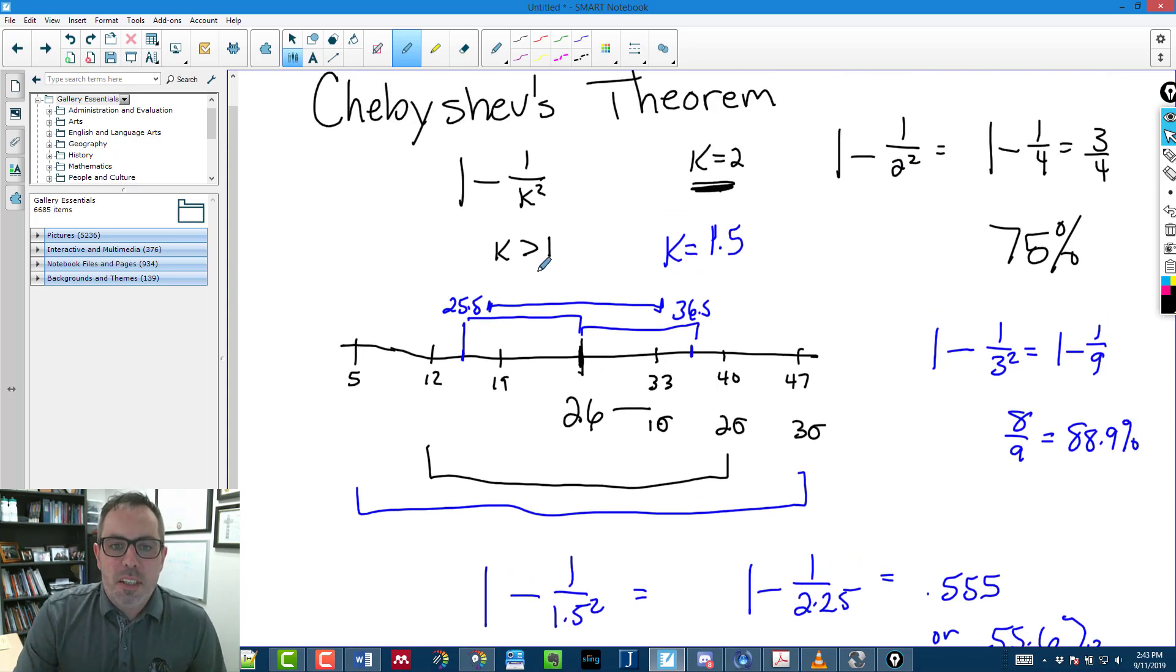1 minus 1 divided by 2.25 gives me 0.555 or 55.6% of the data. So 55.6% of people are going to score between there. So I can be really kind of up in the air.